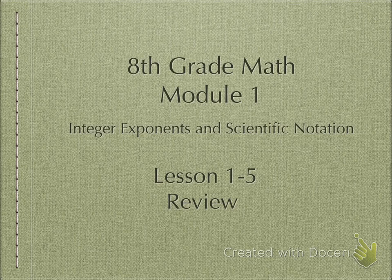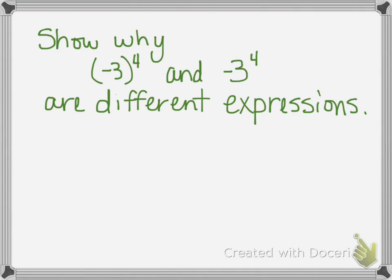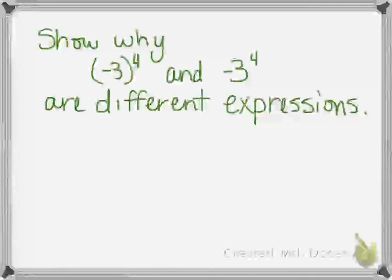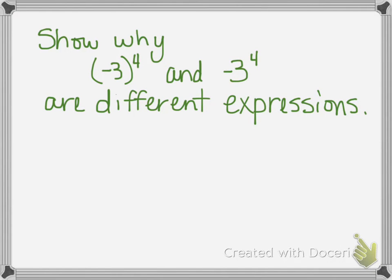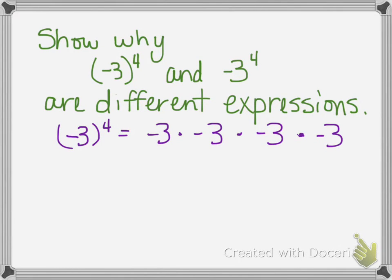I'm going to cover some tricky spots. So in the very beginning, one of the things we covered was the need for parentheses on some of these exponential expressions. You might be asked to show why negative three to the fourth with parentheses would be different from the expression without. The first one — negative three with the parentheses — means to use negative three as the base. It would be negative three used as a factor four times.